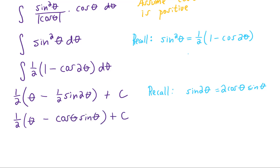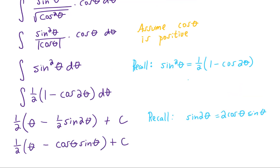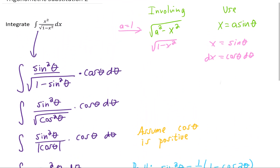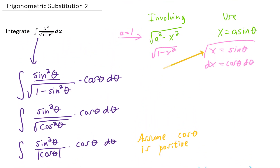As usual with trigonometric substitutions, we get an answer in terms of theta, but our original integral was in terms of x, so we want our answer in terms of x. To do that, let's go back and look at what our original substitution was — x equals sine of theta.